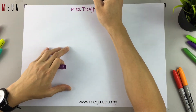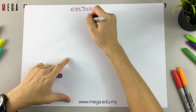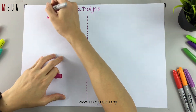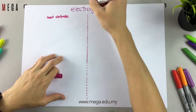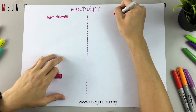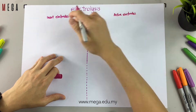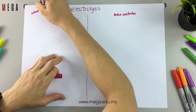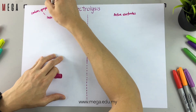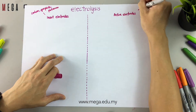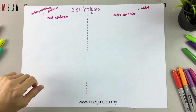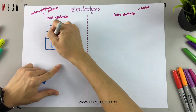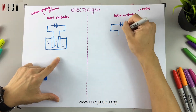Today we are going to talk about the differences between inner electrodes and active electrodes. Just remember, for inner electrodes there are only three types: carbon, graphite, and platinum. Other than these three, all others belong to active electrodes. One more tip: all active electrodes are metals.